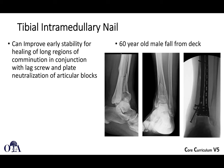Intramedullary nailing of the tibia can also be helpful in certain fracture patterns to improve early stability for healing of long regions of comminution. Here you can see a fracture going well up into the tibial shaft — a pilon fracture that also involves a shaft fracture — where an IM nail can provide significant stability for the shaft component, sometimes used in conjunction with your articular reconstruction.